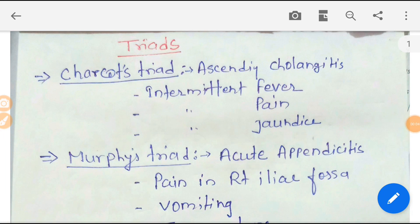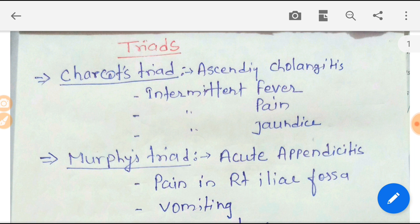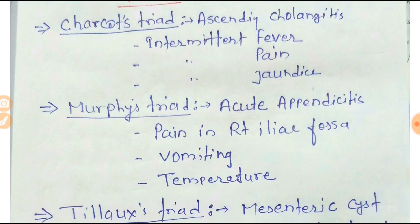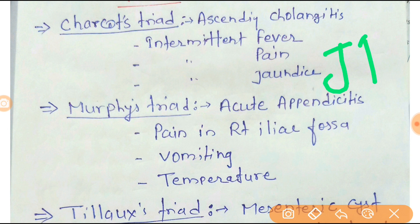The first is Charcot's Triad, found in ascending cholangitis. Charcot's Triad consists of intermittent fever, pain, and jaundice. You can easily remember it by JPF — Jaundice, Pain, Fever.